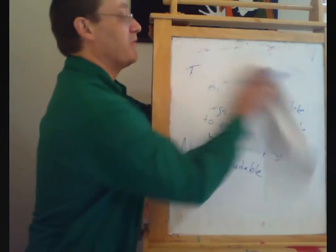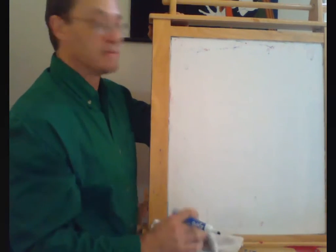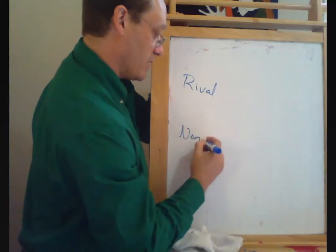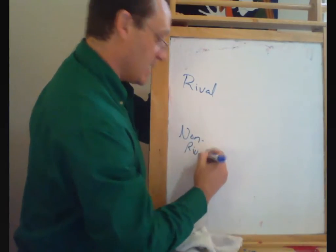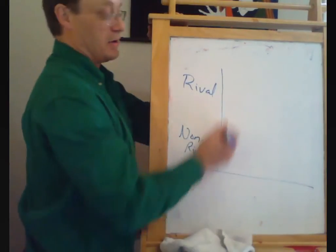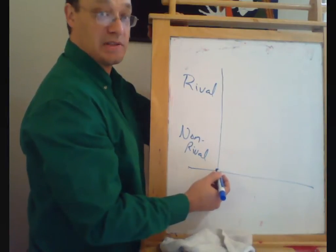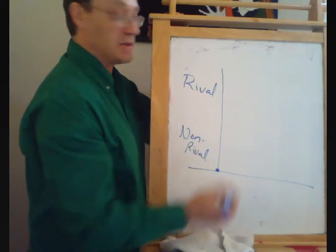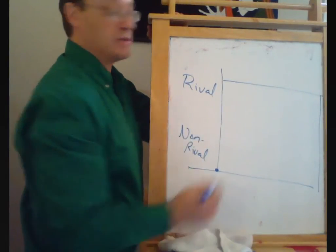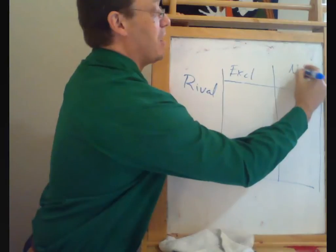If you put these two different characteristics together, you can construct a little matrix. We can think of goods where people are rival and goods where they're non-rival. Think about this as a continuum. Essentially, we're measuring marginal cost per user as we go up here. Marginal cost per user of zero would put us down here. Really high marginal cost per user would put us up there. And then we can look at the excludability issue. Either the good is excludable or it's non-excludable.